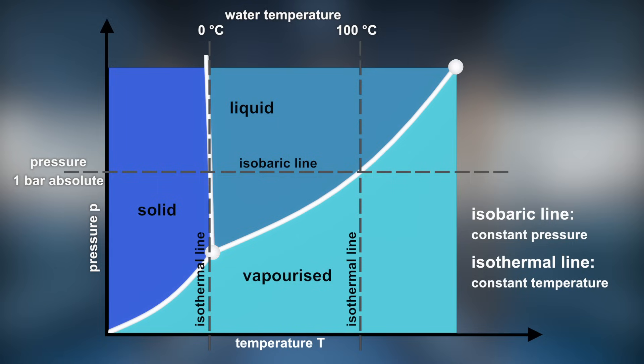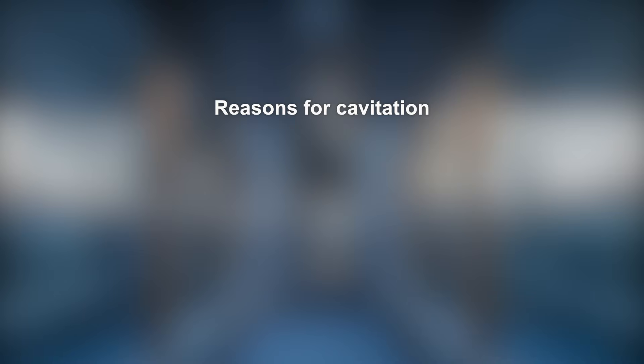Evaporation of water is not only possible when the temperature is increased at a constant pressure. The other possibility is to keep the temperature constant and reduce the pressure below the vapor pressure. Water can evaporate and condensate at temperatures below 100 degrees Celsius if a static pressure is low enough. This is exactly what happens when cavitation occurs.